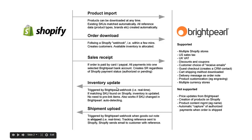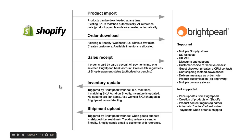When you update inventory in Brightpearl — either increase or decrease — we push those levels across to Shopify. It's the on-hand level in Brightpearl that we send to Shopify, and you can choose whether that on-hand level comes from one warehouse, some of your warehouses, or all of your warehouses. Brightpearl updates Shopify typically within a couple of minutes. This relies entirely on both systems having the same SKU for the same product.